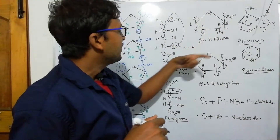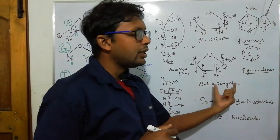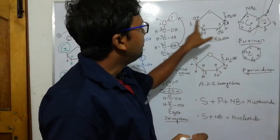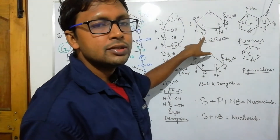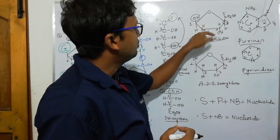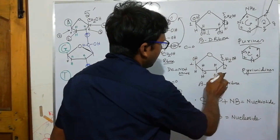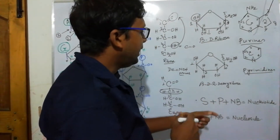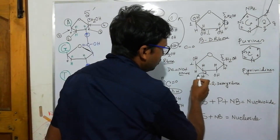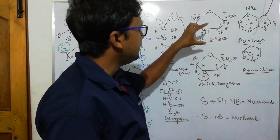This is beta-D-ribose and beta-2-deoxyribose. It is called beta because the OH positions on carbon 1 and carbon 2 are different — the OH position is upward in one and downward in the other. If OH were on the same side it would be alpha. The main difference between ribose and deoxyribose is that at the two carbon position, deoxyribose contains no oxygen, while ribose does.